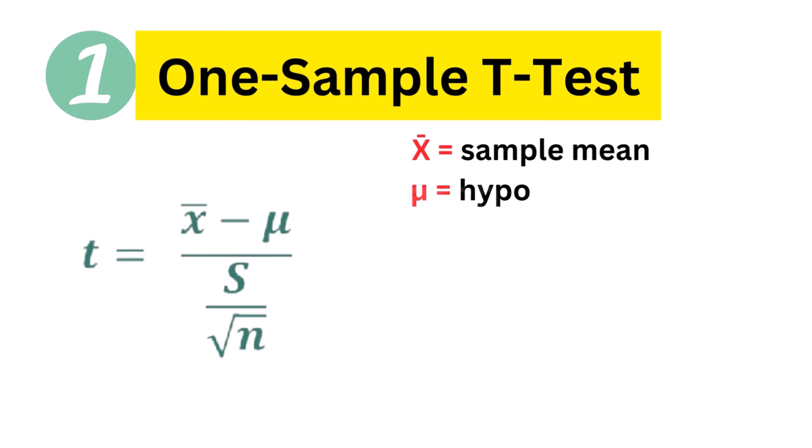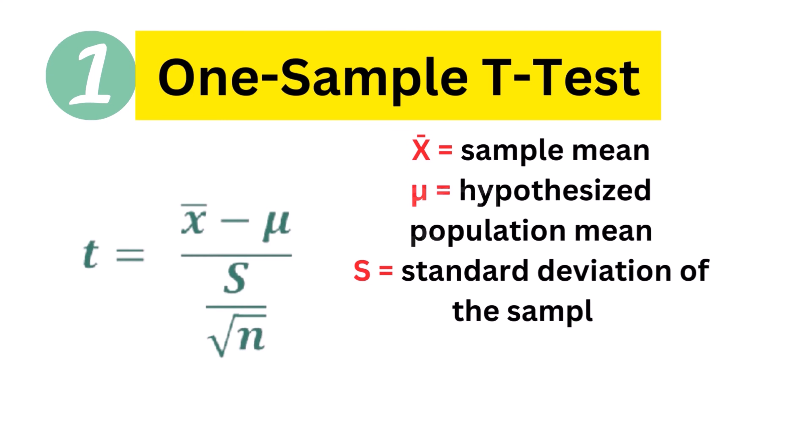The one-sample t-test involves calculating the t-statistic by taking the mean of the sample, subtracting the assumed population mean, and then dividing by the standard error of the mean. It is widely used in research across several domains to examine if a sample is representative of a larger population.